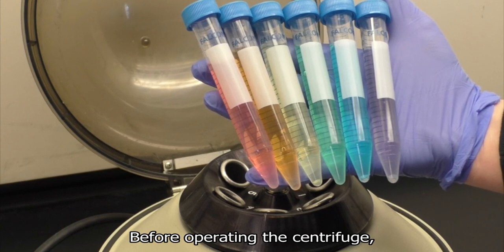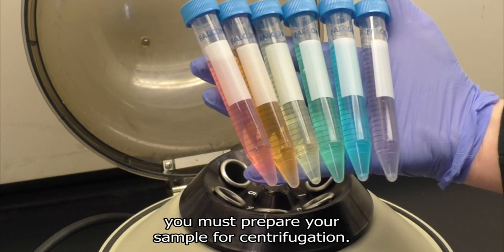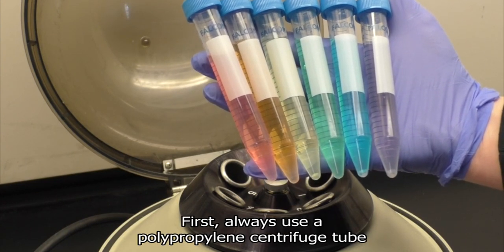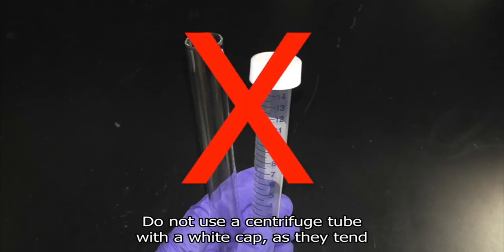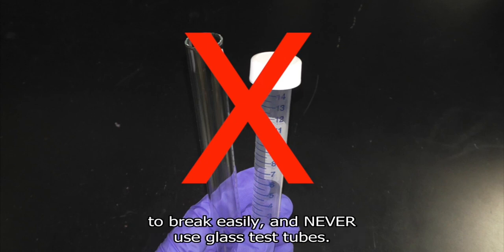Before operating the centrifuge, you must prepare your sample for centrifugation. First, always use a polypropylene centrifuge tube with a blue screw cap. Do not use a centrifuge tube with a white cap as they tend to break easily, and never use glass test tubes.